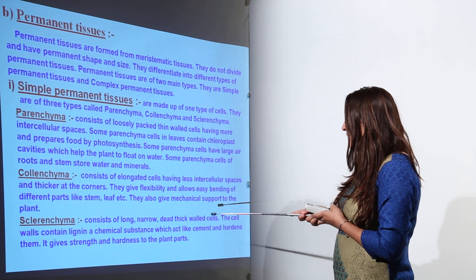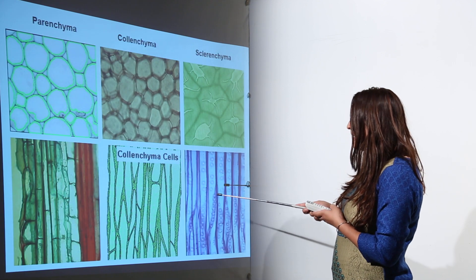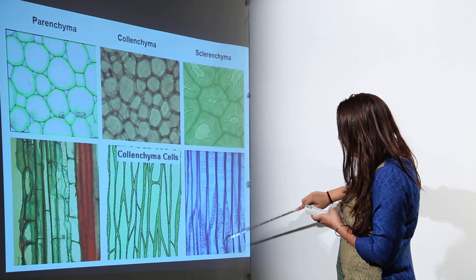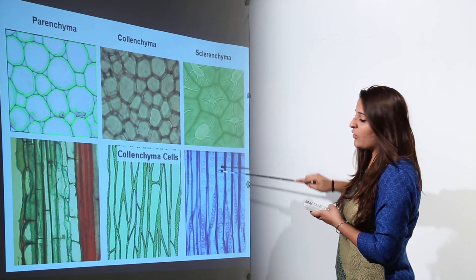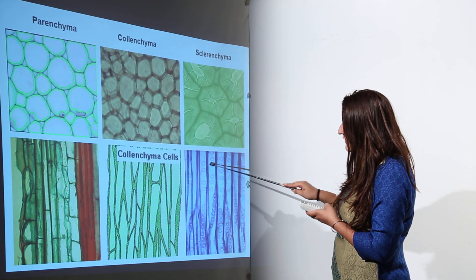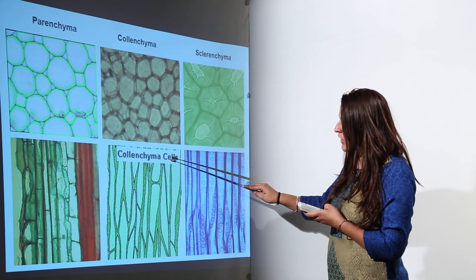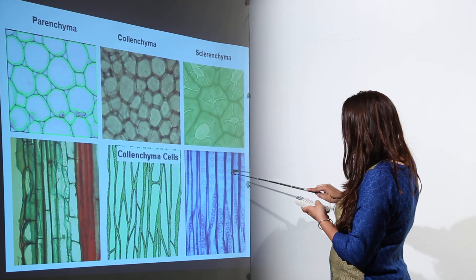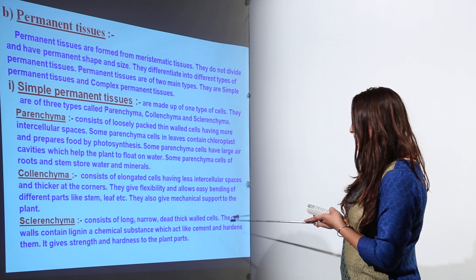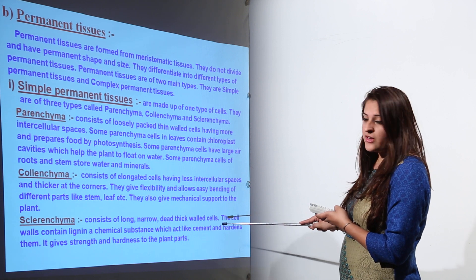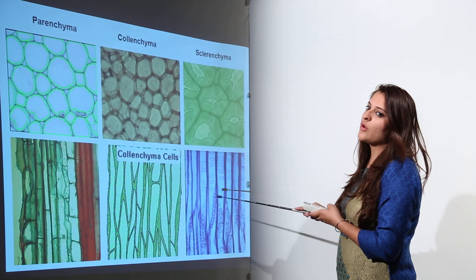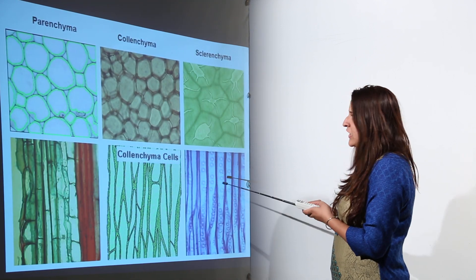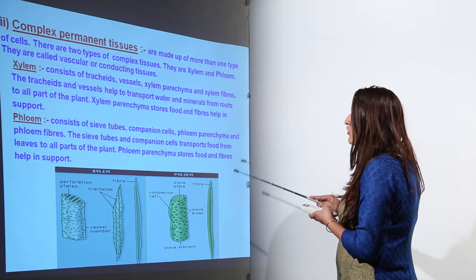Sclerenchyma cells are long and narrow — narrower than both colenchyma and parenchyma cells. These cells are dead cells and have a thick cell wall. This concludes the simple permanent tissues.